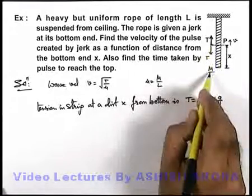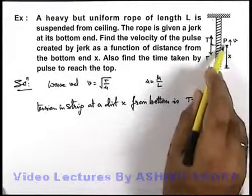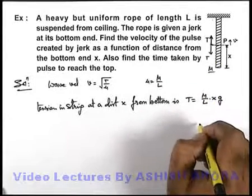If for length L mass is m, mass per unit length will be m by L and the mass of this length x can be written as m by L x and its weight will be m by L x g.